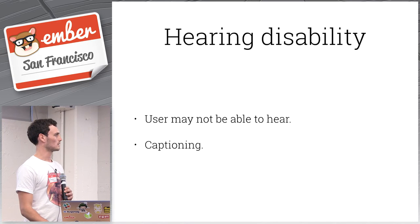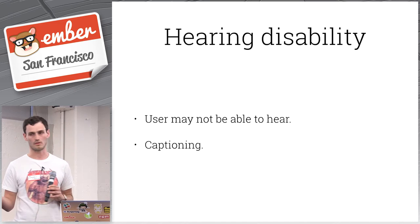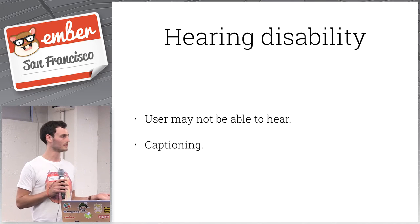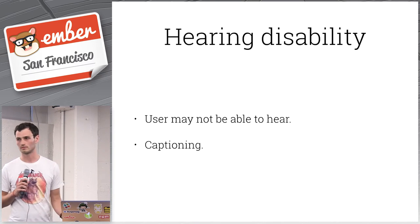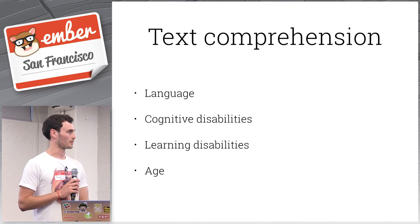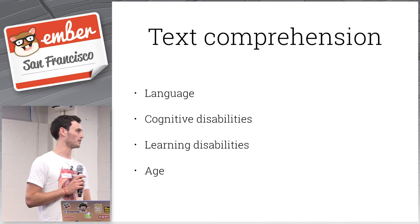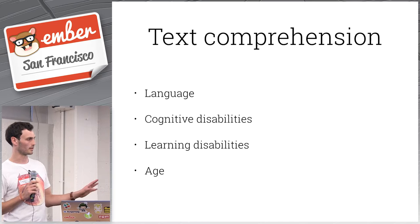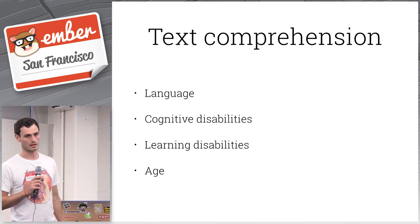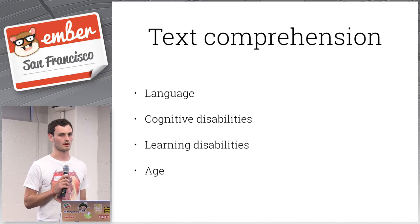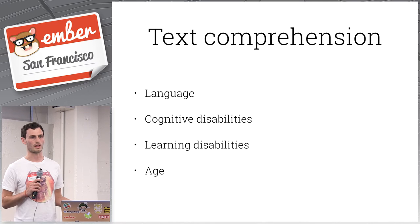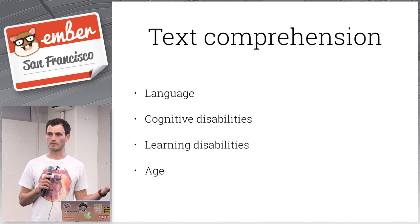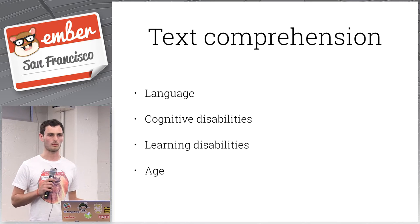Hearing is another factor — if you have audio content and the user can't hear, they won't access your content. The obvious solution is captioning. Text comprehension is another way content can be inaccessible — cognitive and learning disabilities, but also language barriers. Age can be a factor too: if somebody shakes a lot due to age-related mobility issues, that can make your content inaccessible.